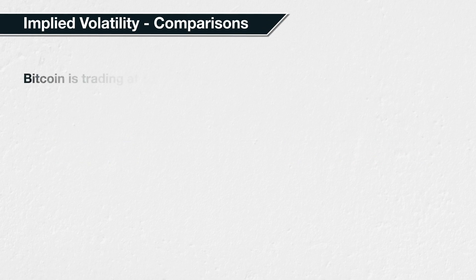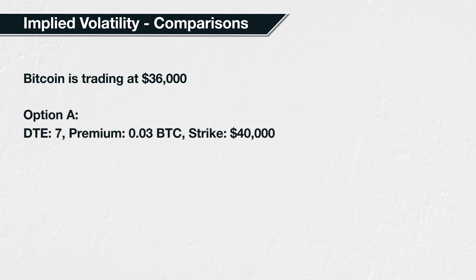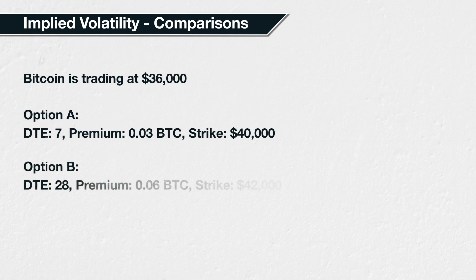Imagine Bitcoin is trading at $36,000. How is it possible to know how a call option that expires in 7 days, costs 0.03 Bitcoin, and has a strike price of $40,000, is priced relative to a call option that expires in 28 days, costs 0.06 Bitcoin, and has a strike price of $42,000? There are too many variables here to make an accurate comparison at a glance. Implied volatility allows us to make such a comparison by normalizing the prices to an annualized volatility figure.